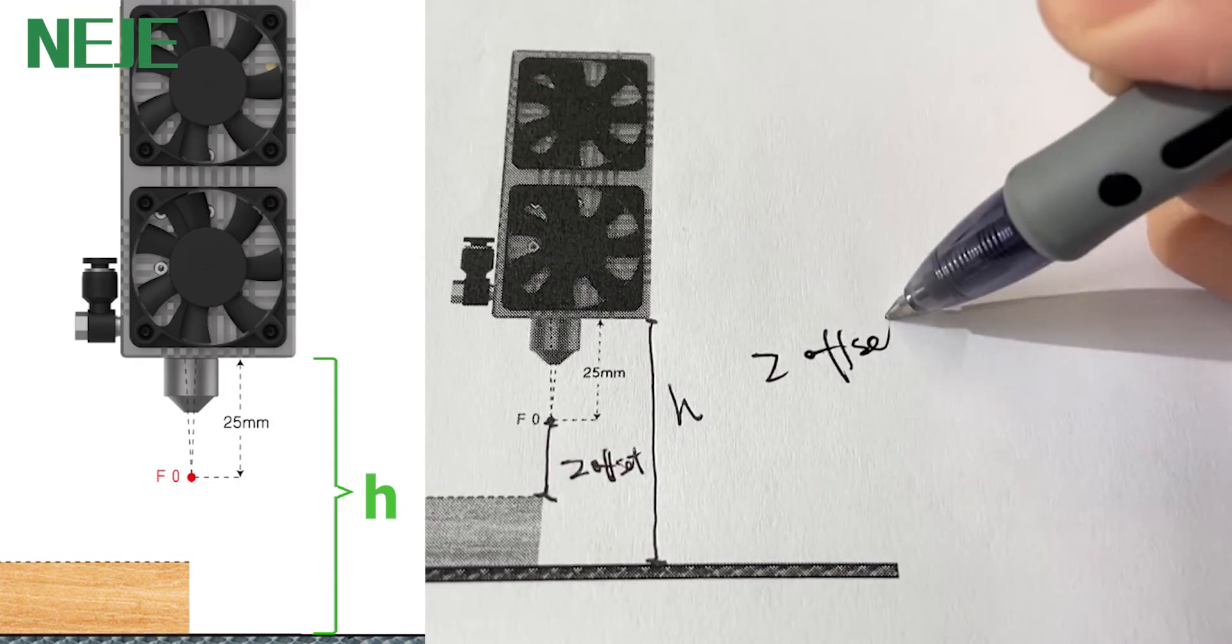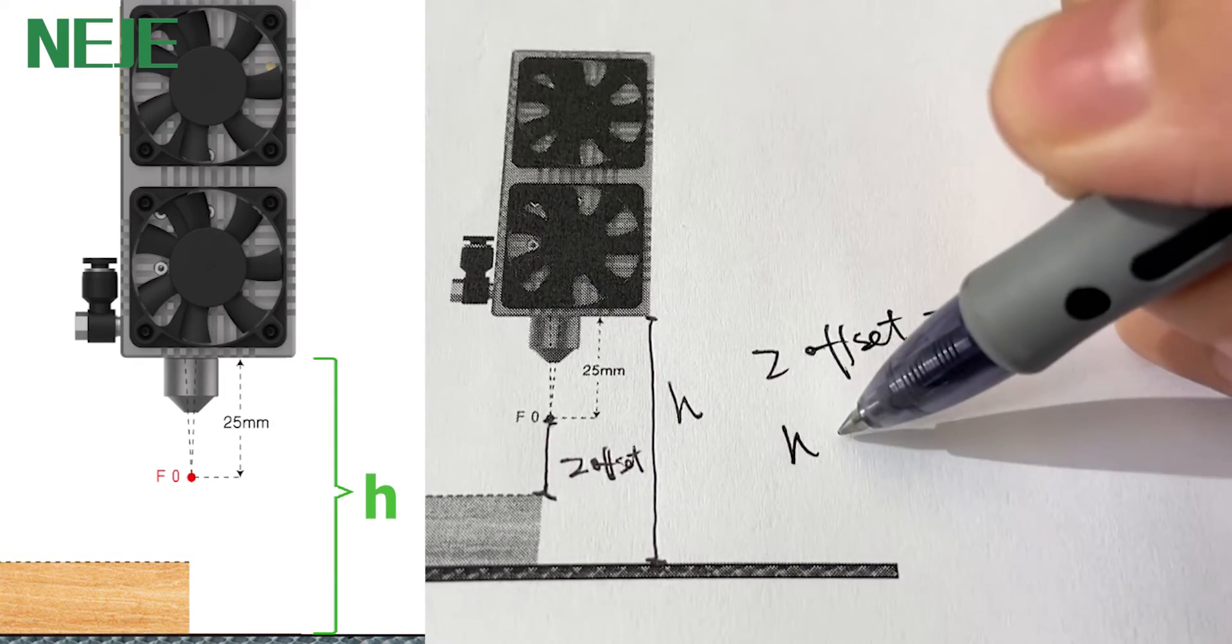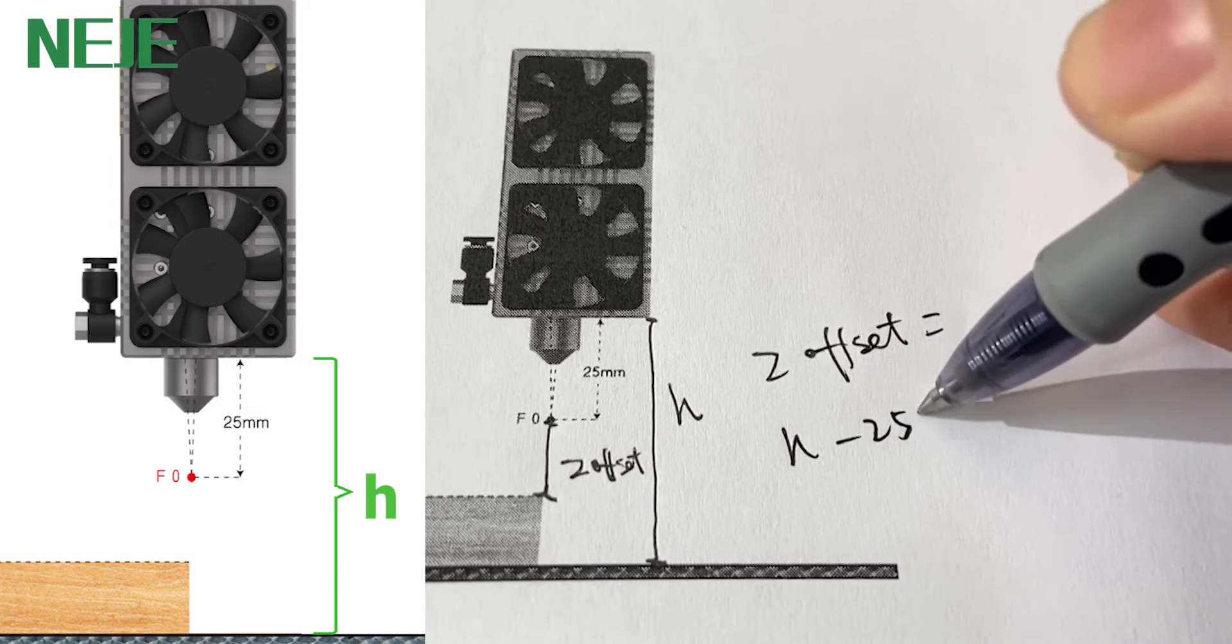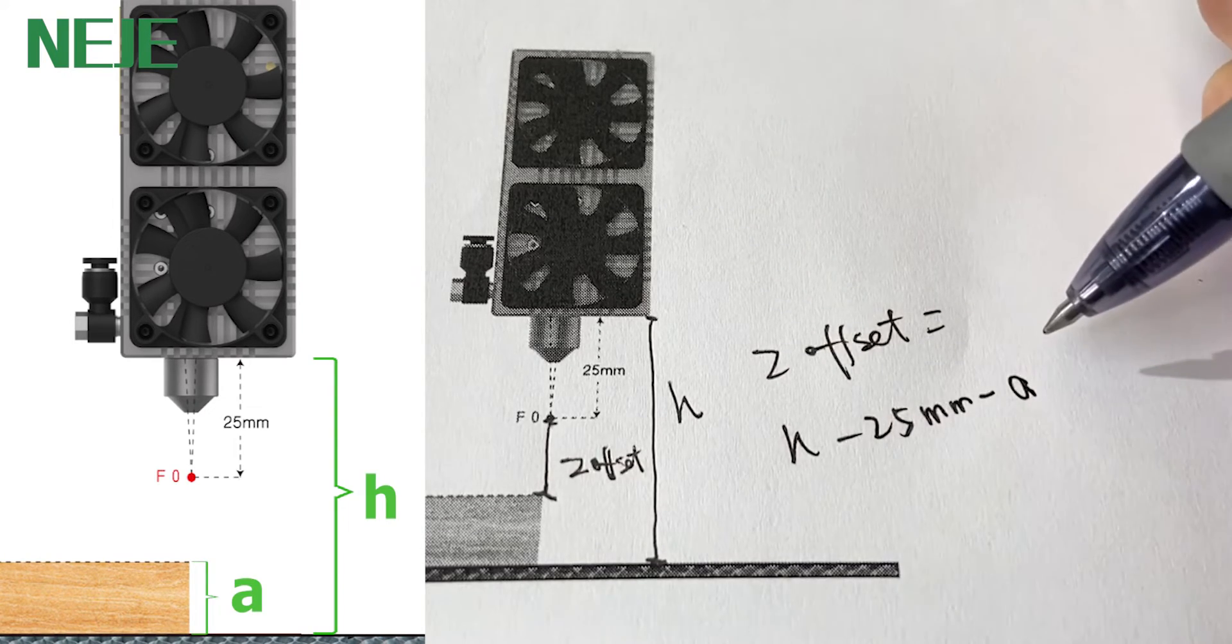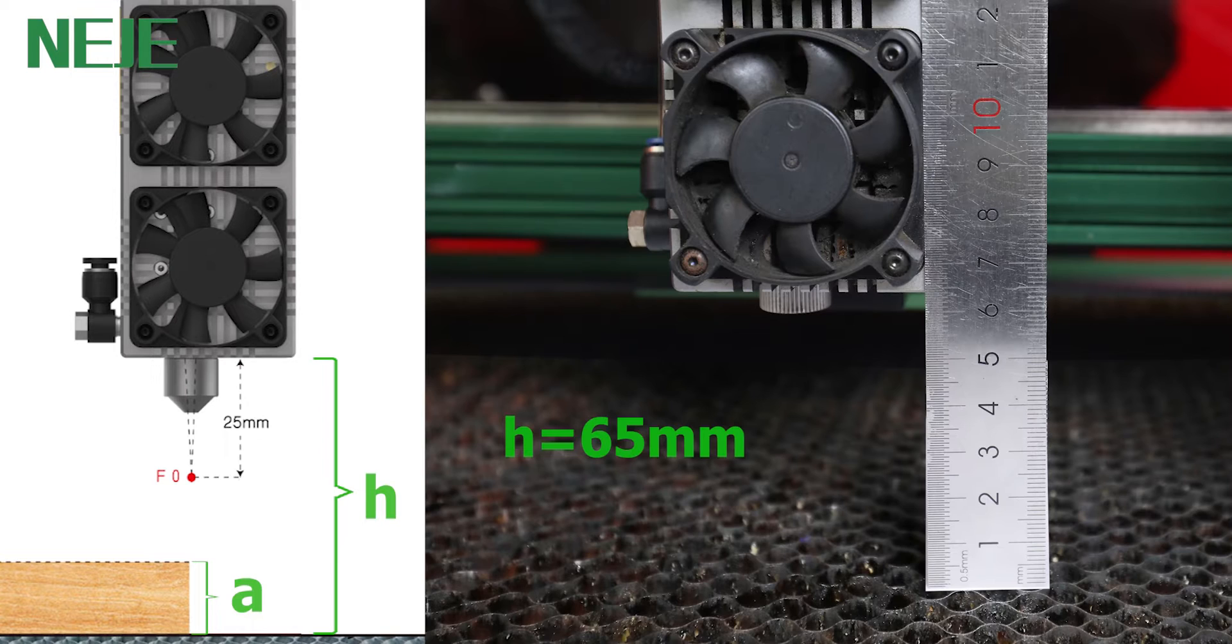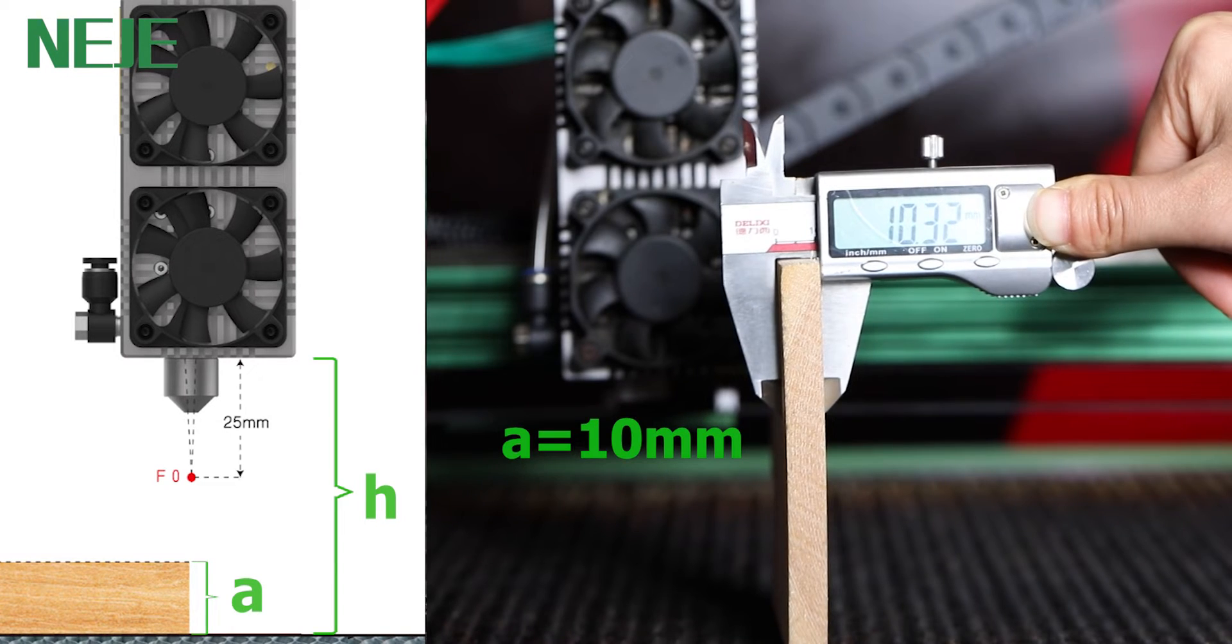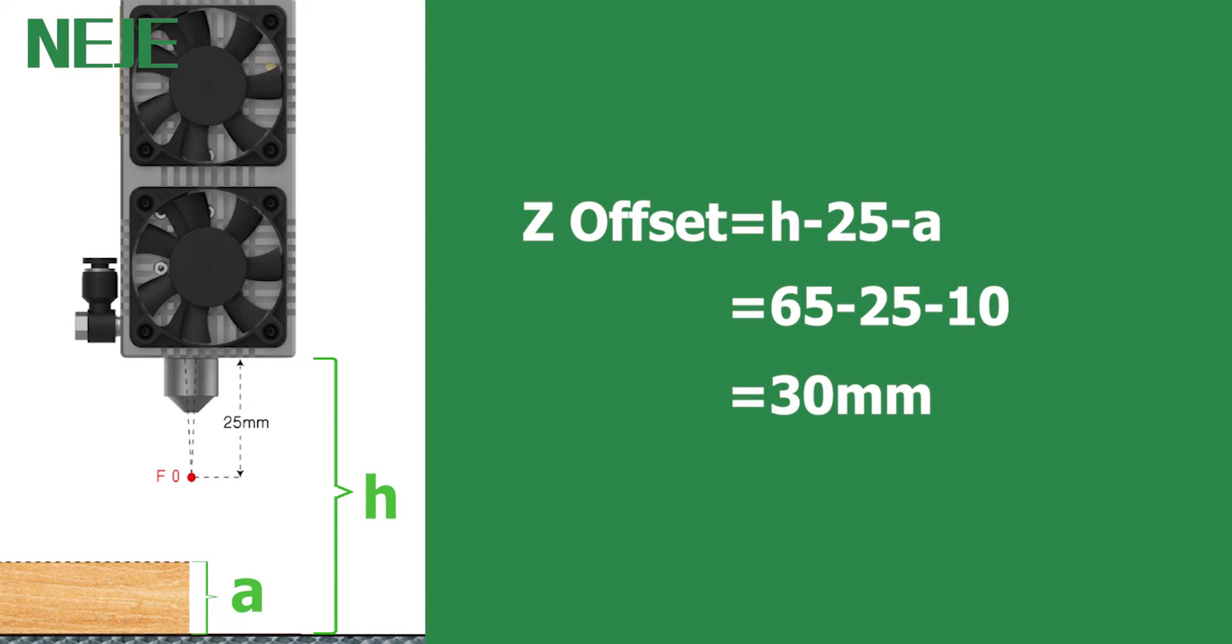In this way, the Z-offset equals H minus 25 millimeters, and then minus the thickness of the material. So we are going to cut through 10 millimeters solid wood, and the Z-offset will be 30 millimeters.